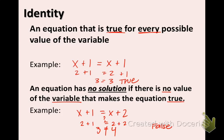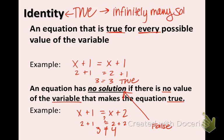So if you get a true statement, it's identity. If you get a false statement, it's no solution. And if you get a true statement, that means that any number will work. So that means infinitely many solutions. You should write that down.